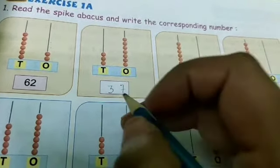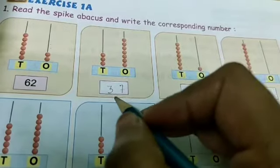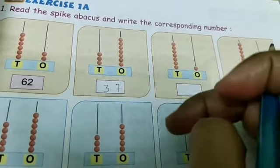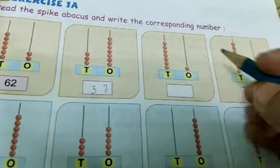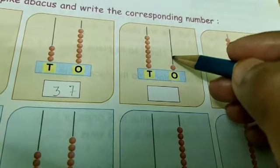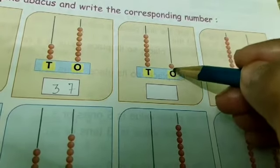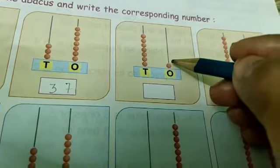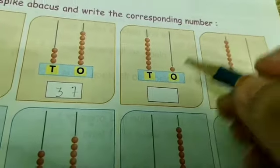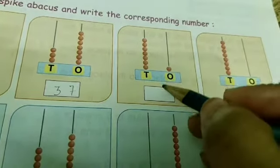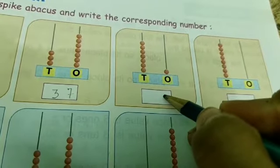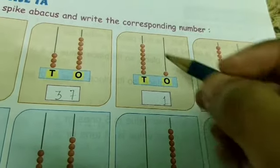So we get the number: thirty-seven. Third question — the one's place rod has one bead. Write it here: one.